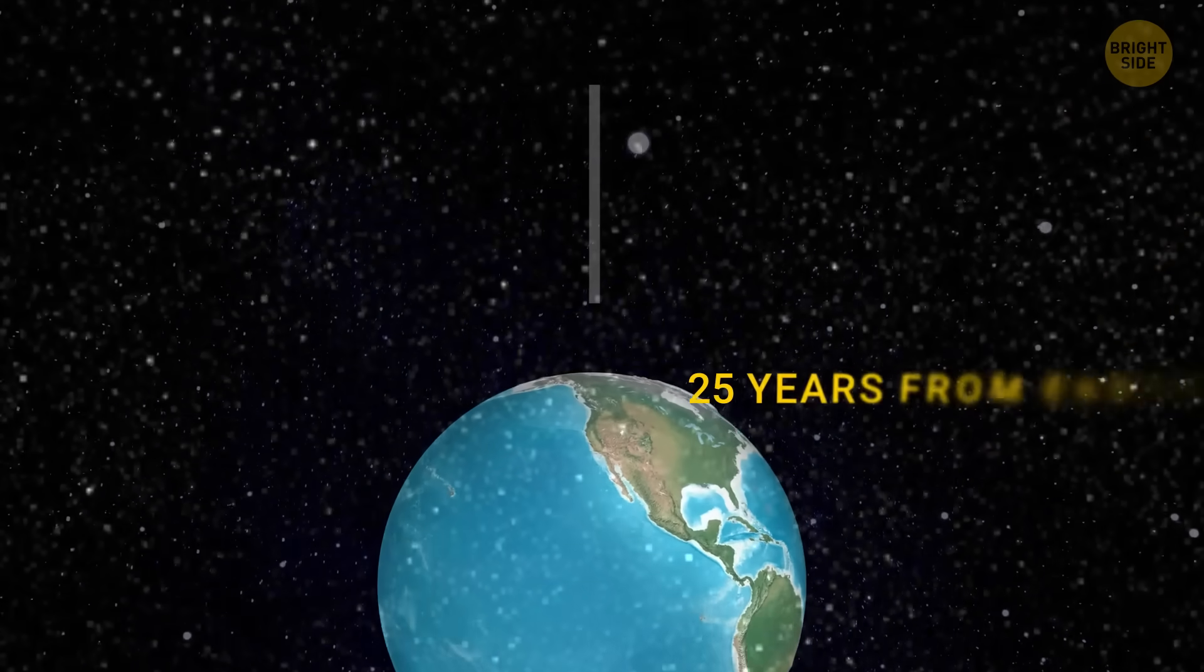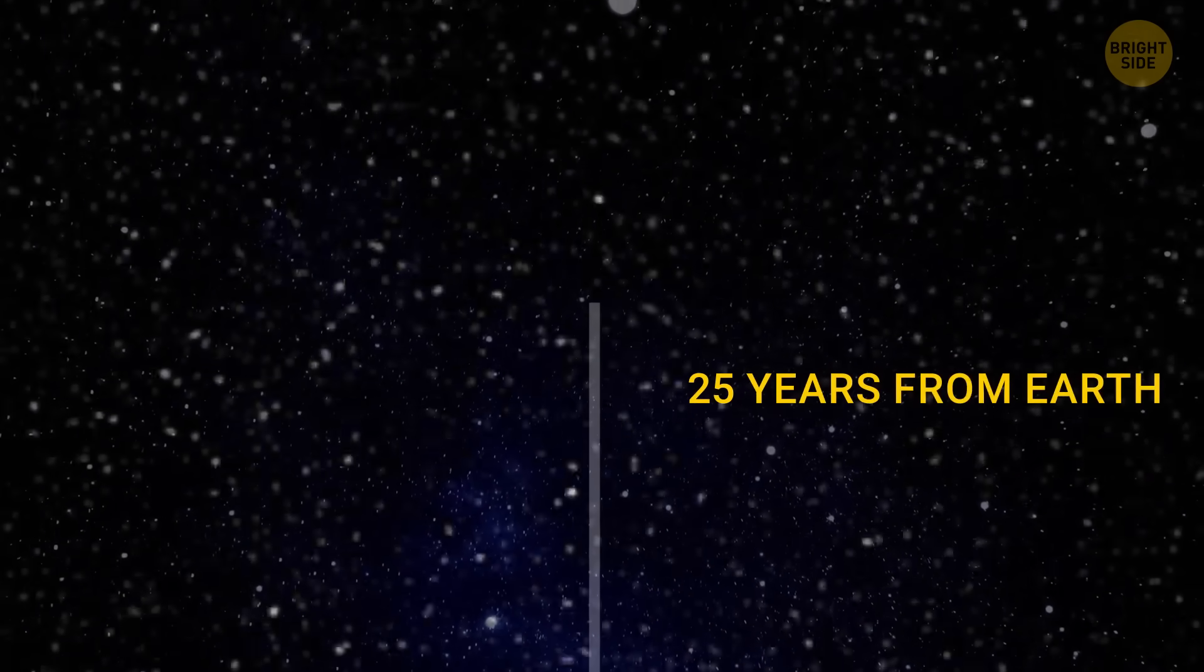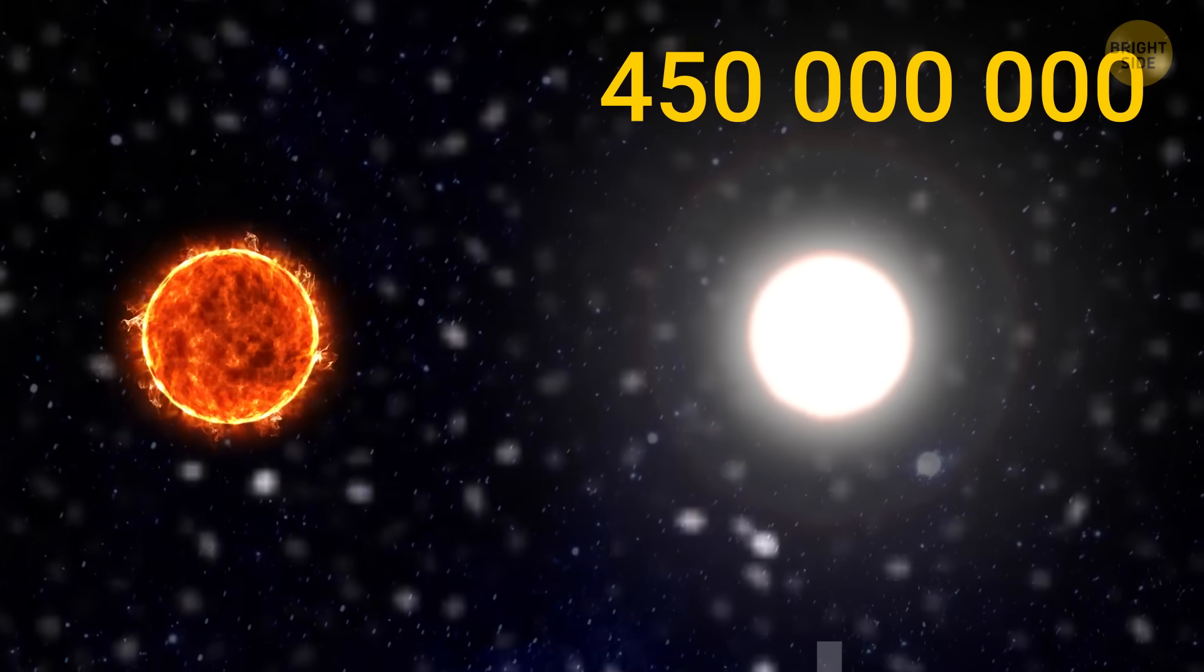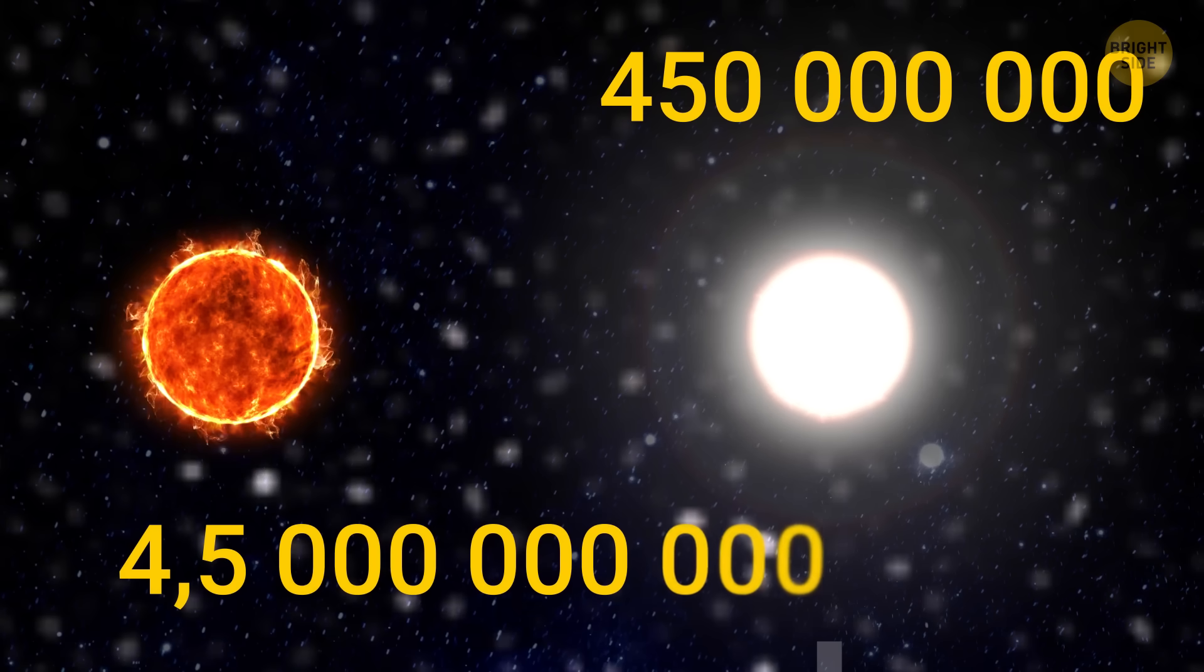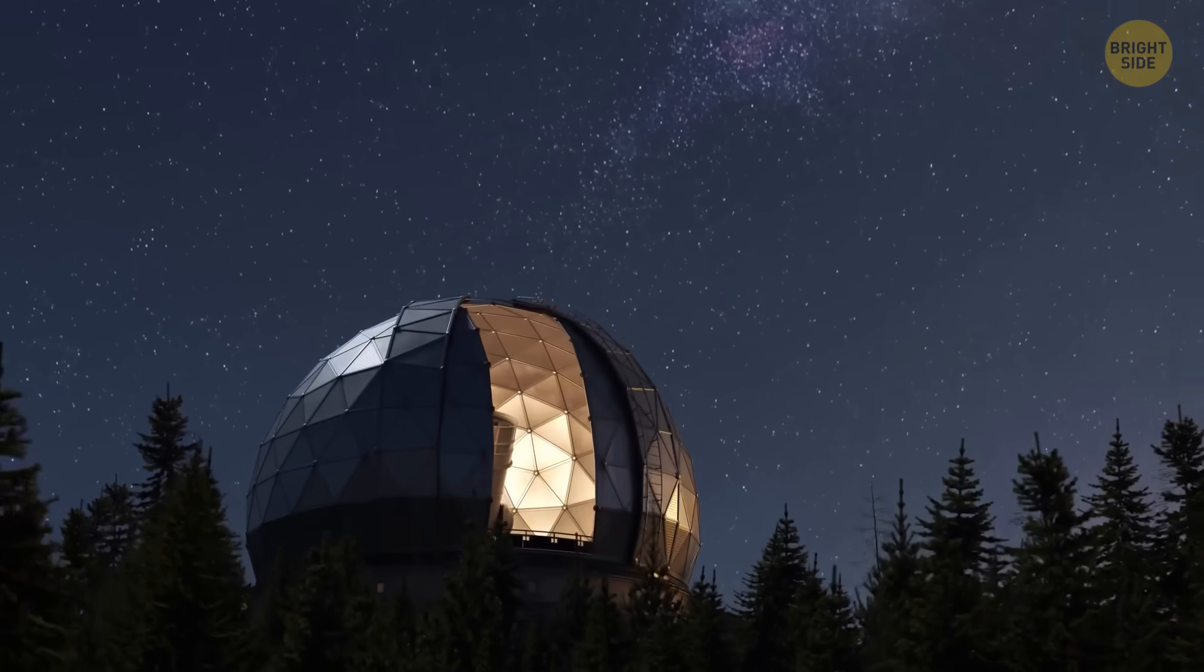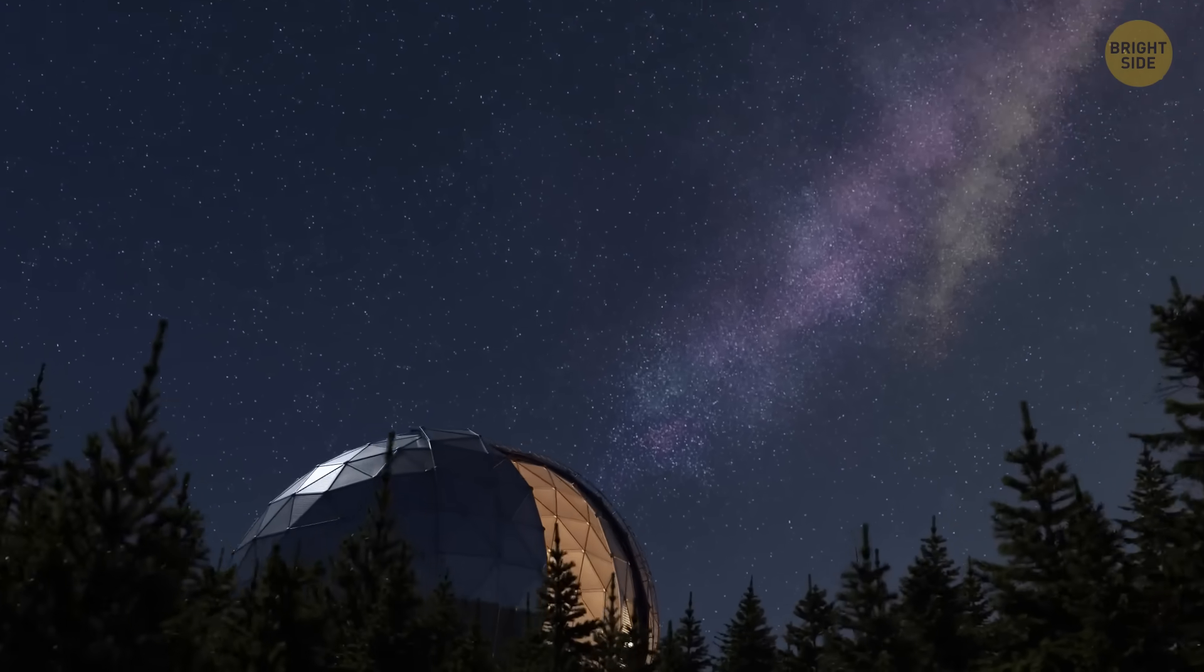This star is located a mere 25 light years from Earth. It's just 450 million years old, which makes it way younger than our own 4.6 billion-year-old star system. Astronomers study Vega to learn more about star systems in the early stages of their formation.